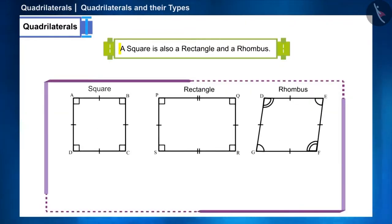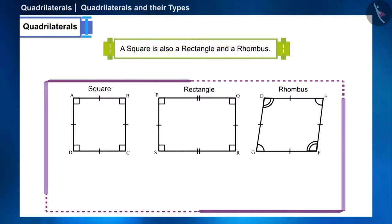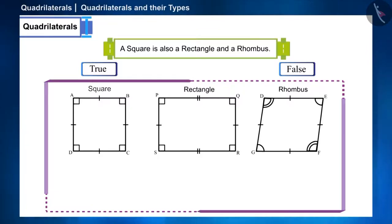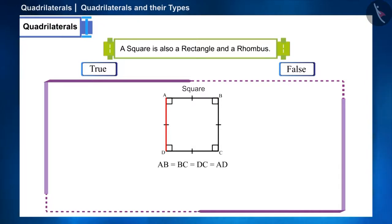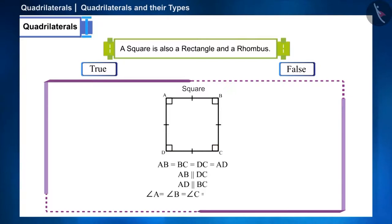In the third statement, it is given that a square is also a rectangle and a rhombus — state whether this is true or false. Note that all the sides of the square are equal, the opposite sides are parallel, and each angle is a right angle, that is 90 degrees.